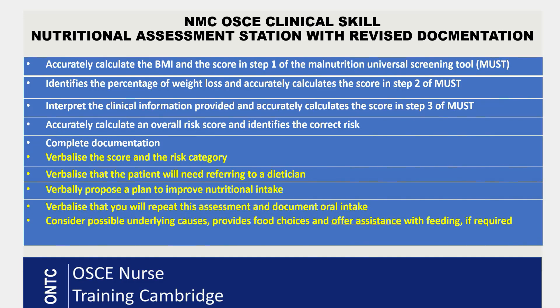Once you've completed the document, you'll verbalize your findings to the examiner. You can see the marking criteria on screen — the first five points relate to documentation, and the highlighted points after that are your verbalization points. You would say: 'I have completed my assessment on Mrs. Smith. My BMI score is 1, weight loss score is 2, and acute disease effect score is 2, giving a total score of 5.'